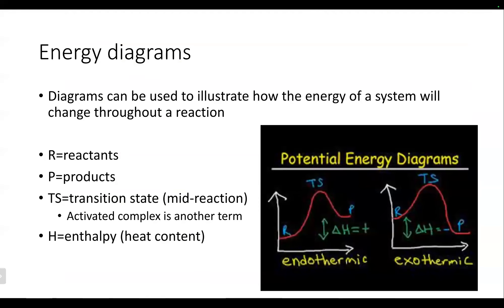With these reactions, we can represent the energy changes using potential energy diagrams. Looking at the diagrams, we've got a couple different pieces: R, TS, and P. We read these like we do chemical reactions — on the left-hand side, that's where our reactants are located, showing us the substances we're starting with.